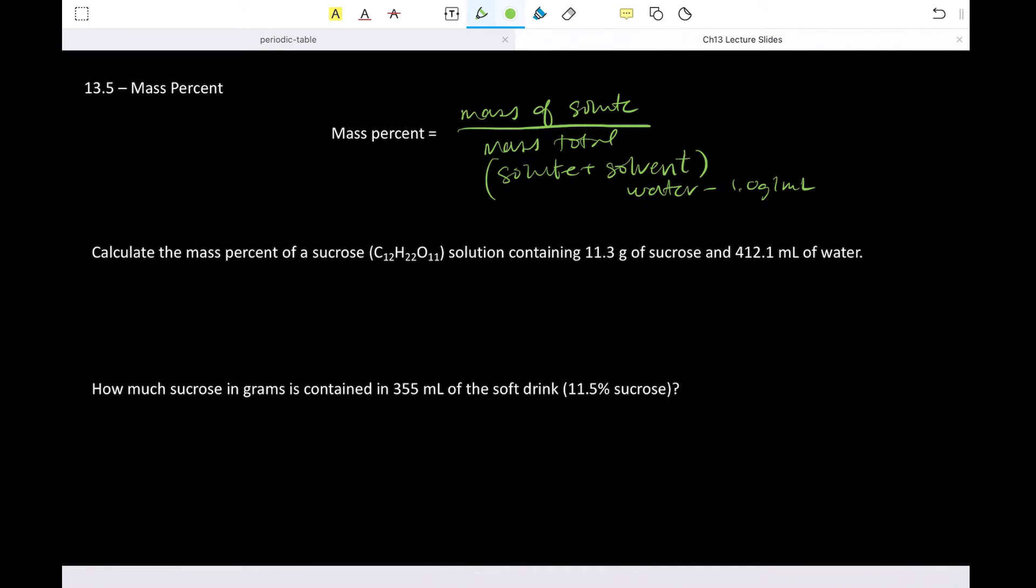So calculate the mass percent of a sucrose solution containing this many grams of sucrose and that many mils of water. So what do we do? We just do the formula. So it's going to be solute, so this is our solute of our sucrose over the total mass.